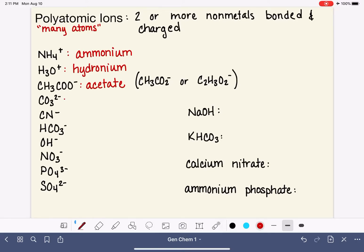CO3- is carbonate. CN- is cyanide. HCO3- is bicarbonate, sometimes called hydrogen carbonate.